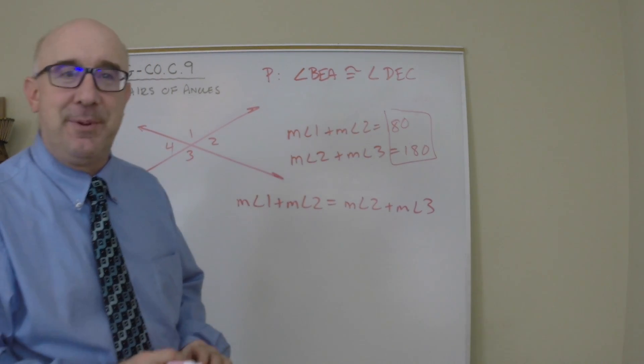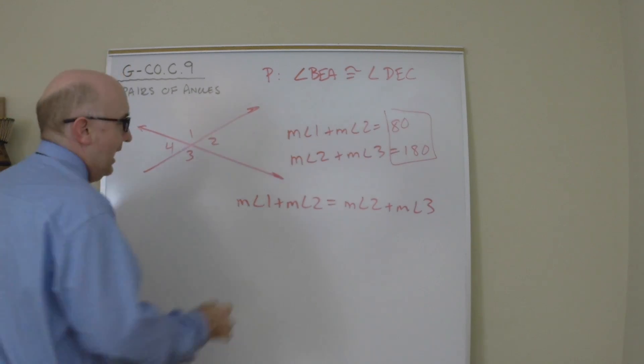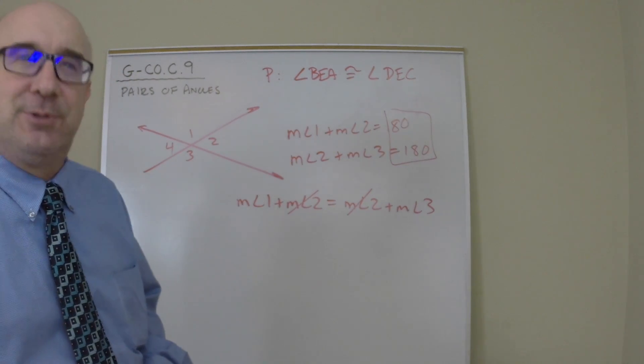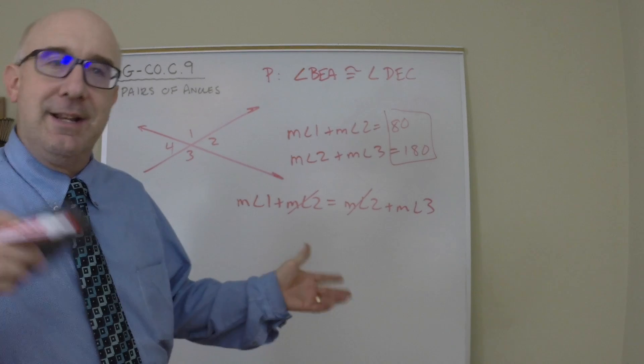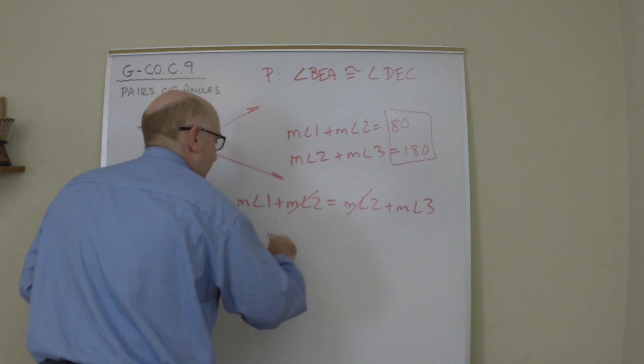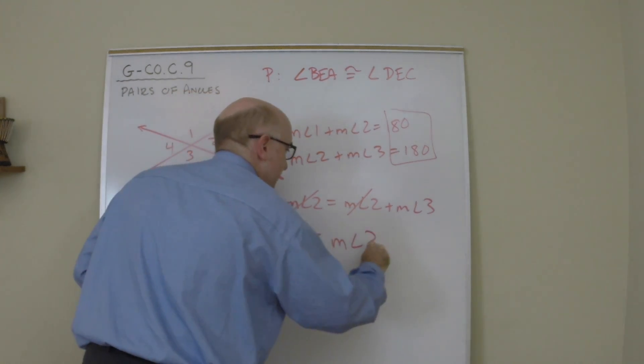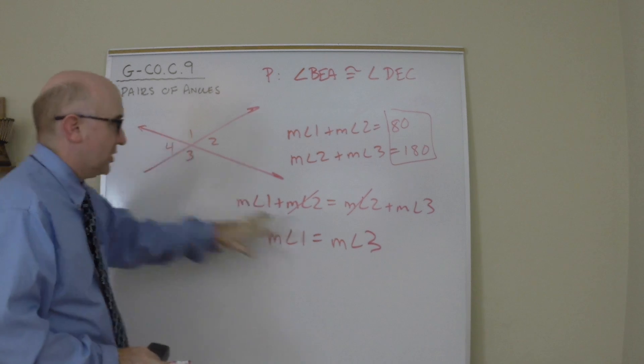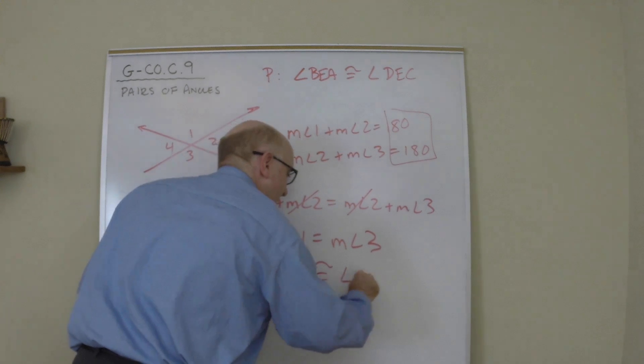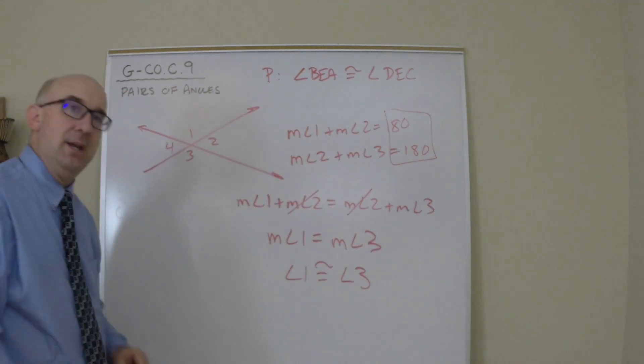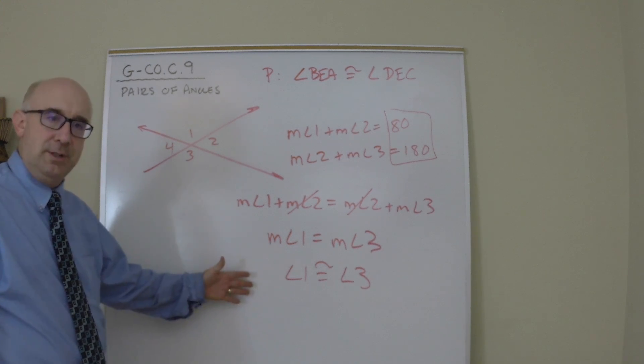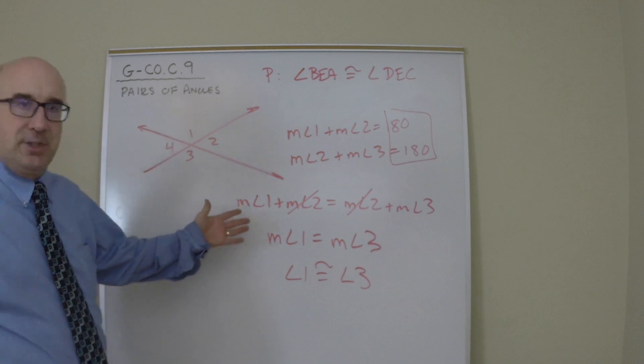The final step of this proof is something you can easily see. I could subtract the same thing from both sides. That's the addition, subtraction property of equality, meaning I can subtract or add the same thing to either side of an equation. And I get the measure of angle 1 is equal to the measure of angle 3. Vertical angles are equal. Or one more step would say angle 1 is therefore congruent to angle 3 because of the definition of congruence, which means if the items are equal, then they are congruent.